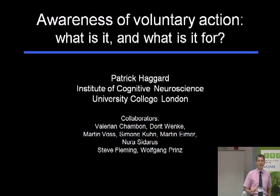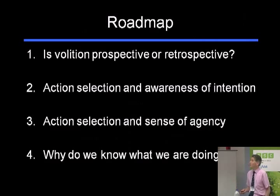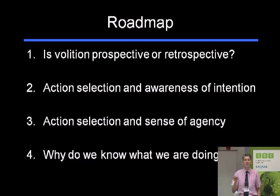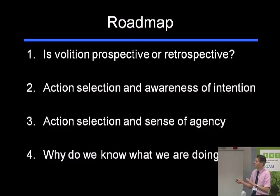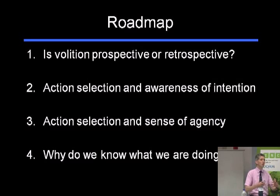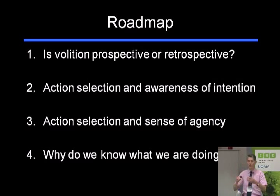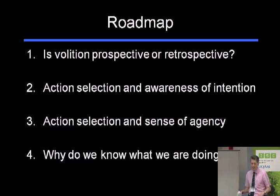So let's just tell you what I'm going to tell you in the next 40 minutes. I'm going to try and deal with four questions. I'm going to discuss whether volition is prospective or retrospective. I'm going to talk about the particular role of action selection — selecting what action to make, choosing between action alternatives — in our experience of intention and of volition. I'm then going to move from talking about volition and intention to talking about agency, and I'll talk about the role of action selection in developing a sense of agency. And then we were invited to make problematic causal speculation, so I'll try and do that at the end, but there's only one slide.